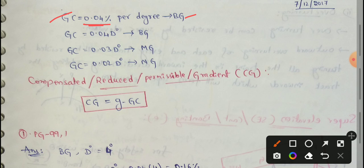The grade compensation formulas by gauge type are: for broad gauge, GC = 0.04 × D degrees; for meter gauge, GC = 0.03 × D degrees; for narrow gauge, GC = 0.02 × D degrees.